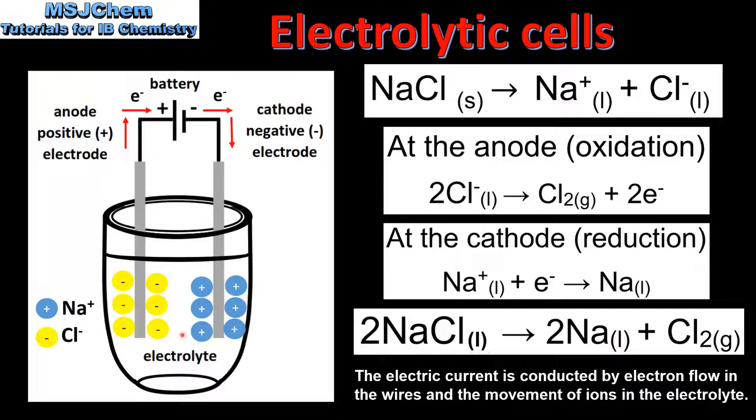The second way in which the electric current is conducted is by the movement of ions in the electrolyte. For example, the negative ions move to the positively charged anode and the positive ions move to the negatively charged cathode.